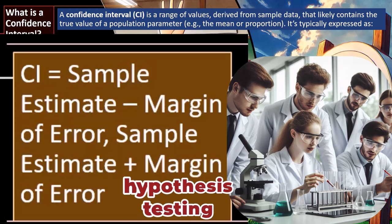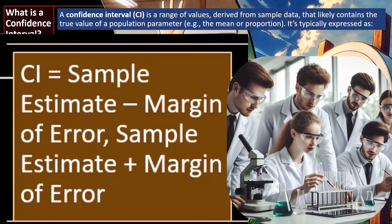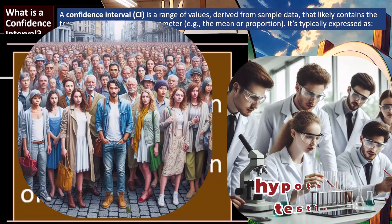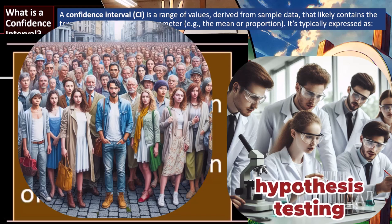We have a similar scenario to hypothesis testing: we want to find information about a large population but can't test every item. For example, we can't test every individual person for average height, so we take a sample, test it, and see whether we can apply the findings to the larger population. There are two ways to set this up: hypothesis testing, which we covered in a prior presentation, and confidence intervals, which we're covering now.